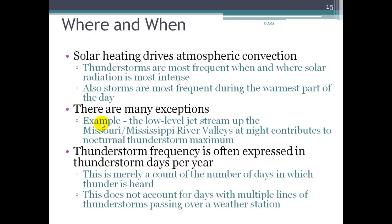Solar heating drives atmospheric convection — it drives weather entirely — and in this case it drives convection. Thunderstorms are most frequent when and where solar radiation is most intense. On a global scale, that's around the equator, and for North America it's most intense in the summer. At the daily scale, thunderstorms are most frequent during the warmest part of the day, when warm air is encouraged to lift and form cumulonimbus clouds.